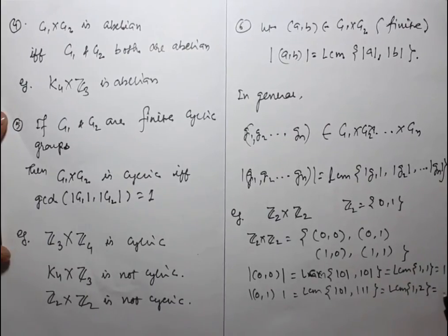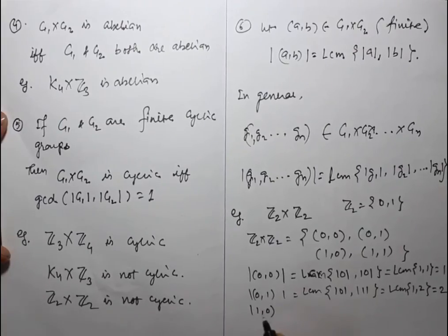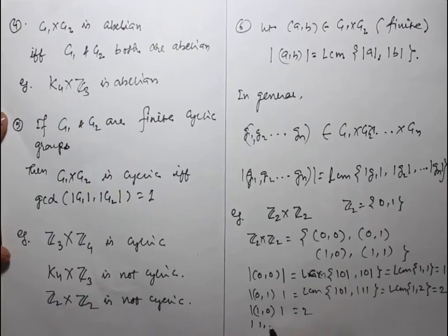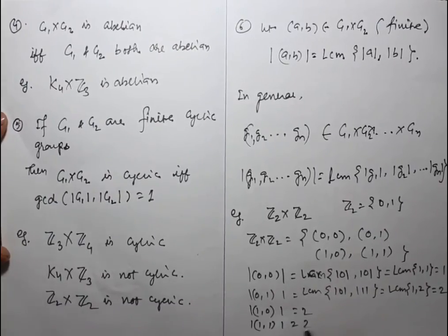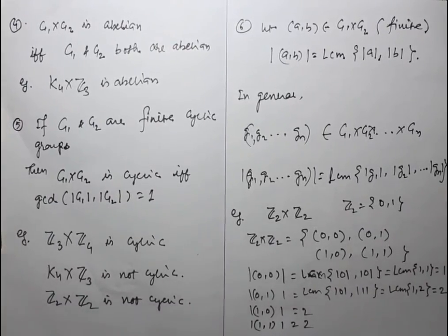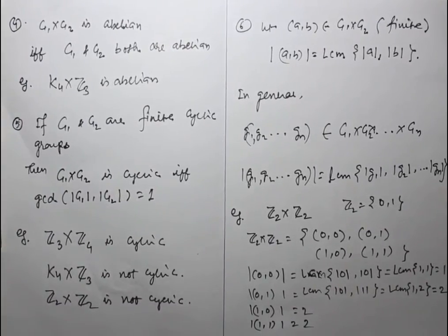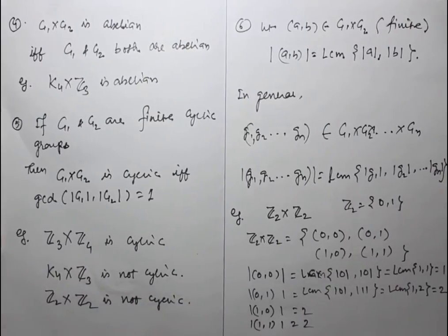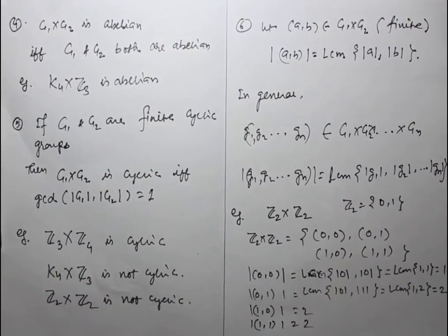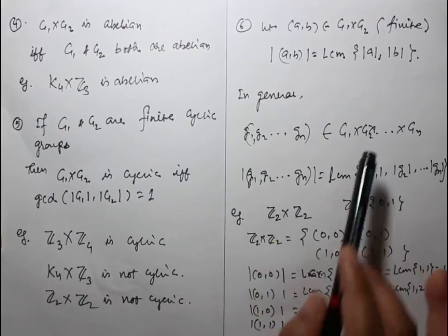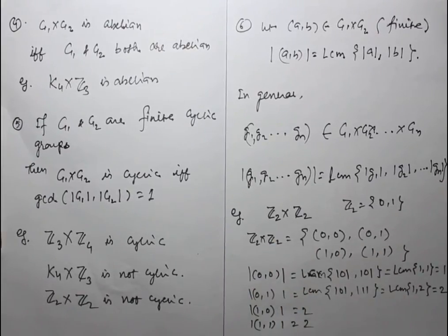In Z2 cross Z2, the element (1,0) has order 2 and (1,1) has order 2. Using the LCM property, you can find the order of any element in a Cartesian product group very easily.